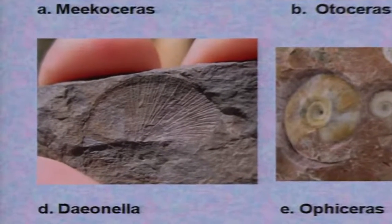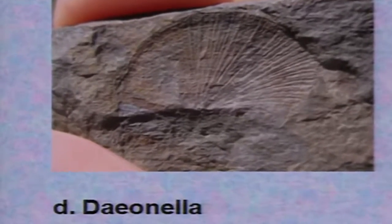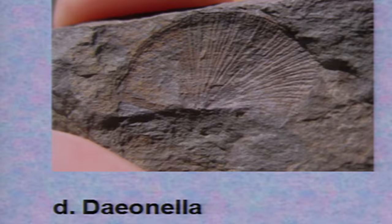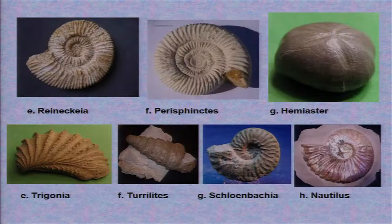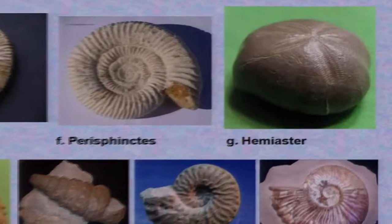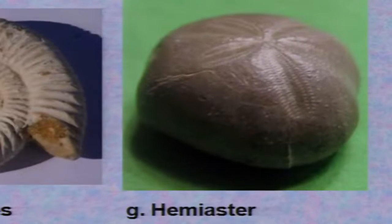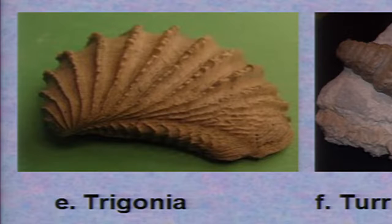The Lamellibranchia fossil happens to be Donella, which is marked as D. The rest are all Cephalopods belonging to the Ammonoidia group. This slide consists of Ammonoids, one fossil from Echinoidia that is Hemiaster, and one fossil from Lamellibranchia that is Trigon Arca.